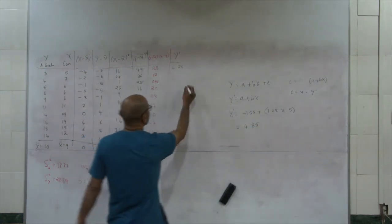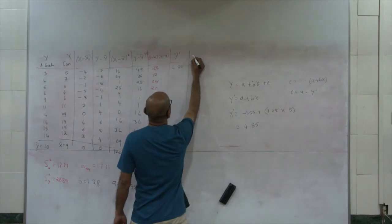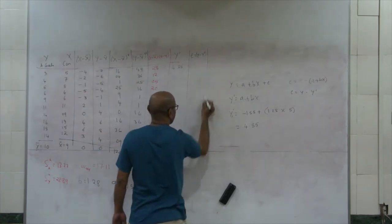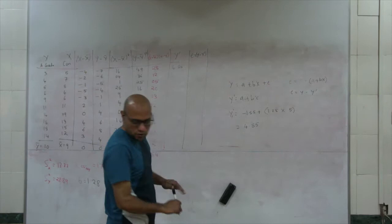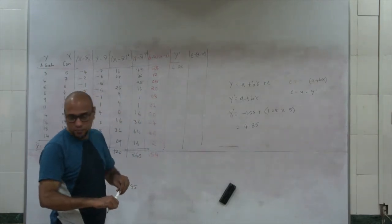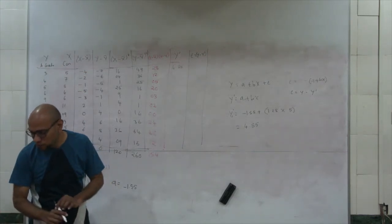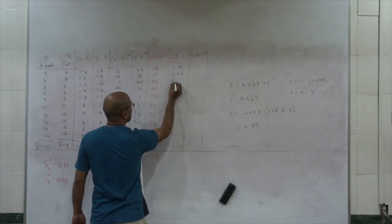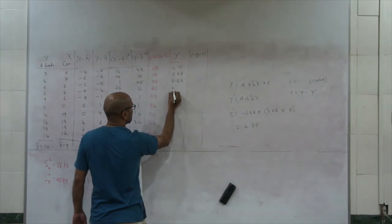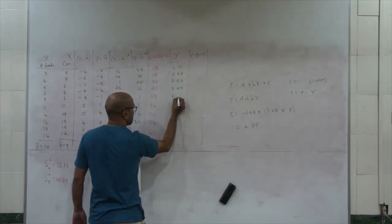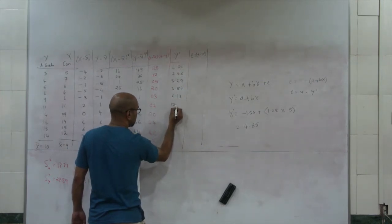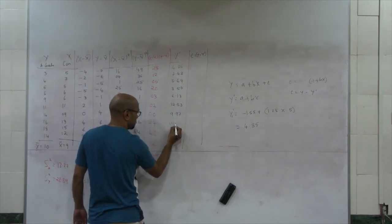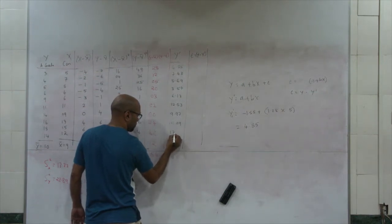We can have another set of data, that is e, which equals y minus y-prime. Let's get these predicted values — you've already calculated them. The predicted values are: 7.41, 7.43, 8.69, 3.57, 6.13, 12.53, 9.97, 15.09, 17.65, and 13.81.